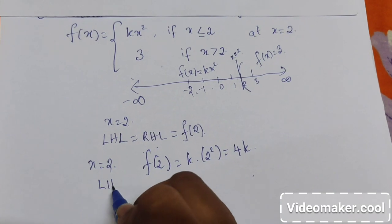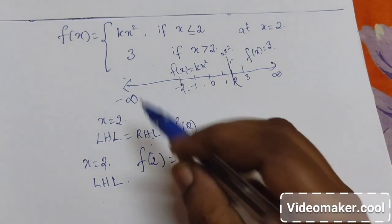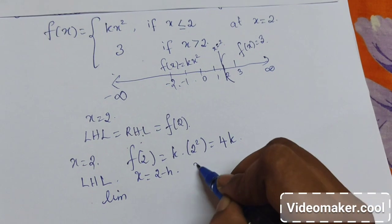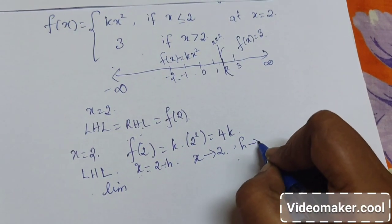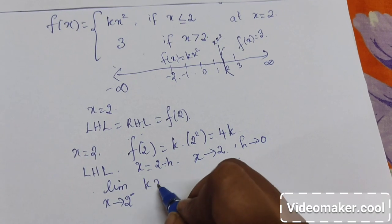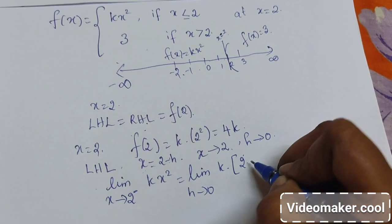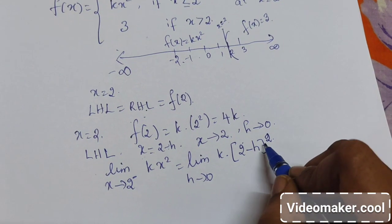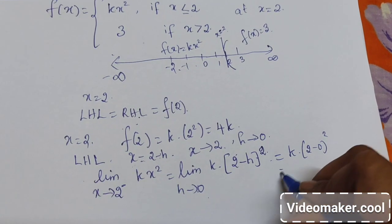Now we will calculate the left hand limit. In the left hand limit, x values will be 2 minus h in the left hand neighborhood. As x tends to 2, h tends to 0. So limit x tends to 2 from the left: k into (2 minus h) whole squared. Substituting h as 0, we get k into (2 minus 0) whole squared, which is again 4k.